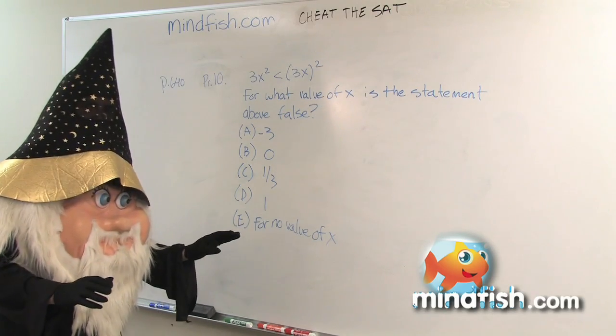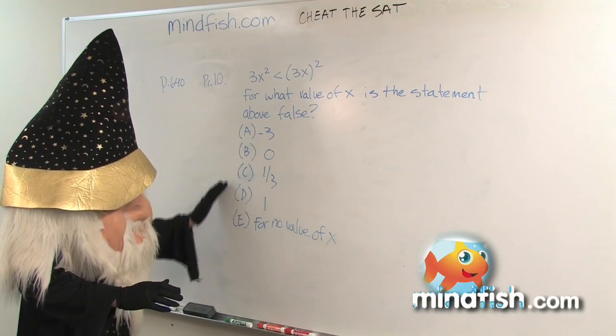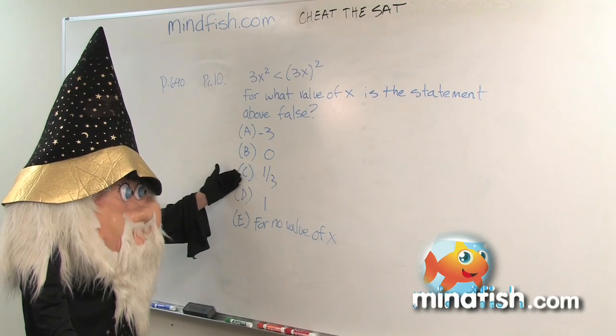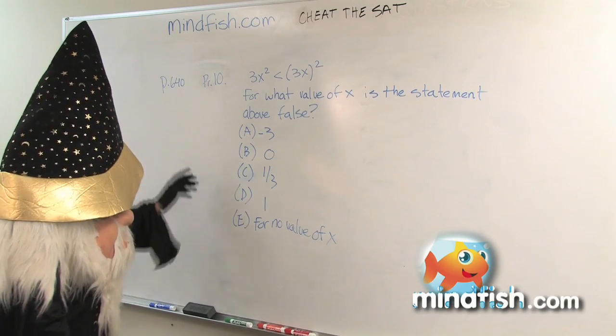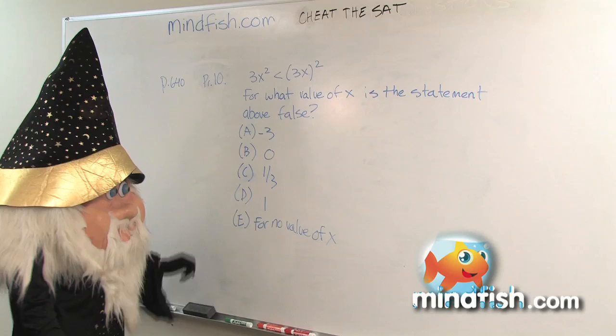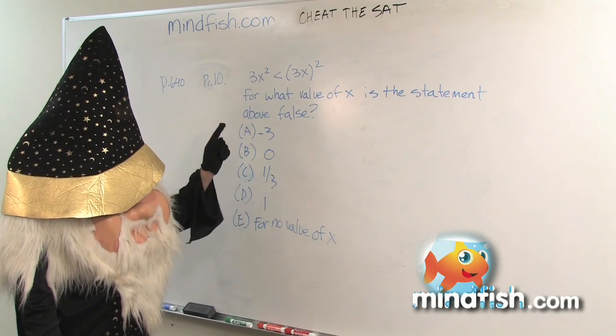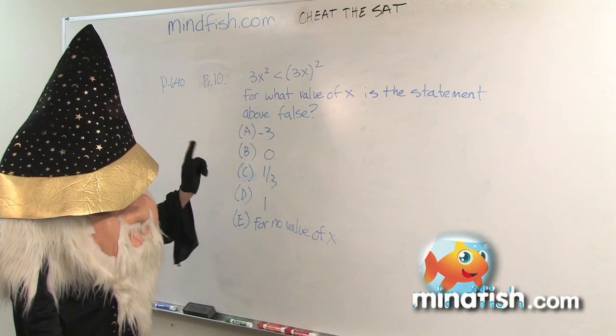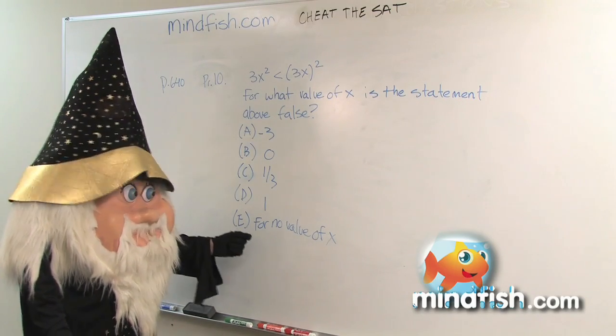Working backwards takes advantage of the fact that this is a multiple choice test, meaning you don't have to come up with an answer, you just have to tell me which answer is right. The following question, which is problem 10 on page 640, says for the equation 3x² < (3x)², for what value of x is this statement false?